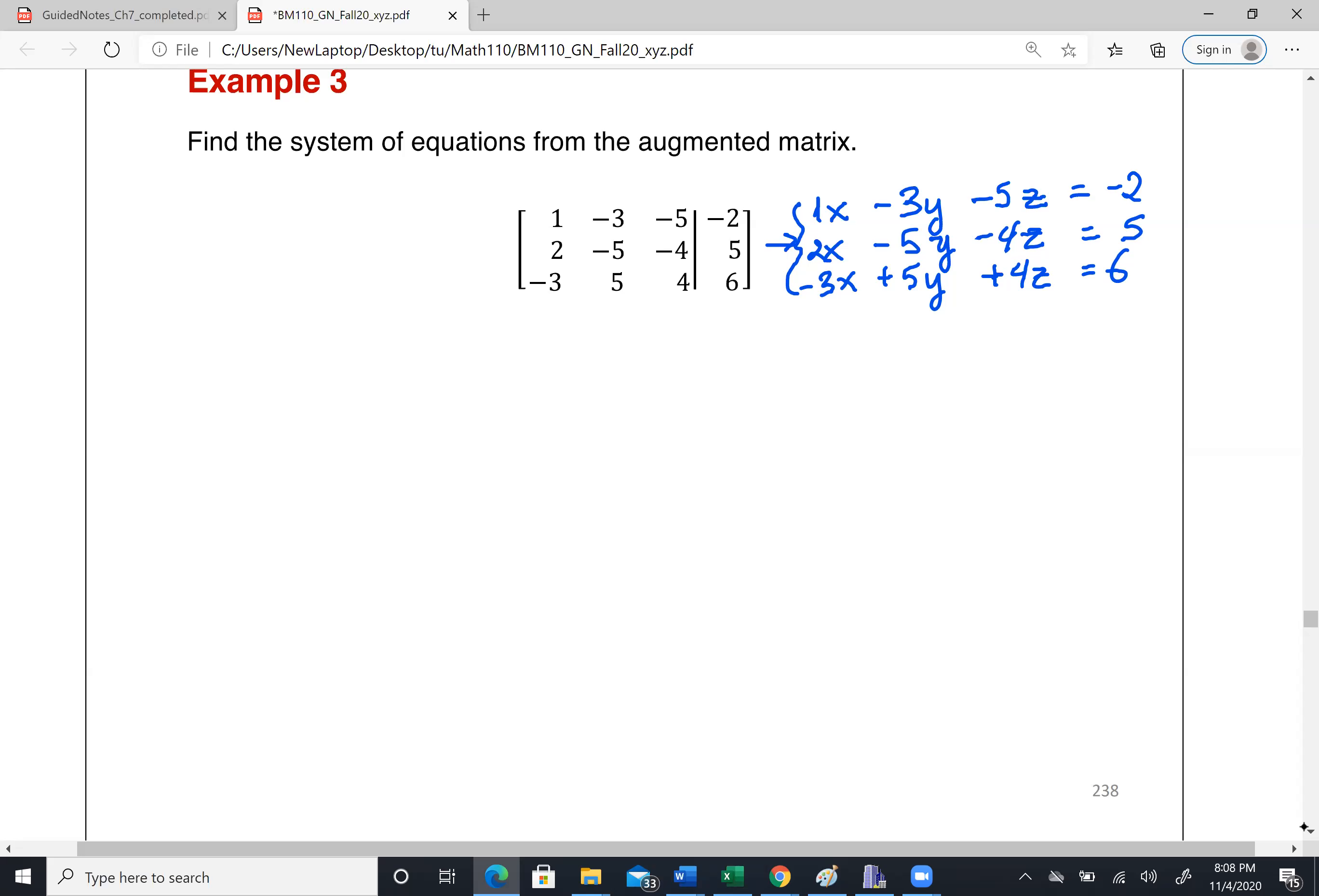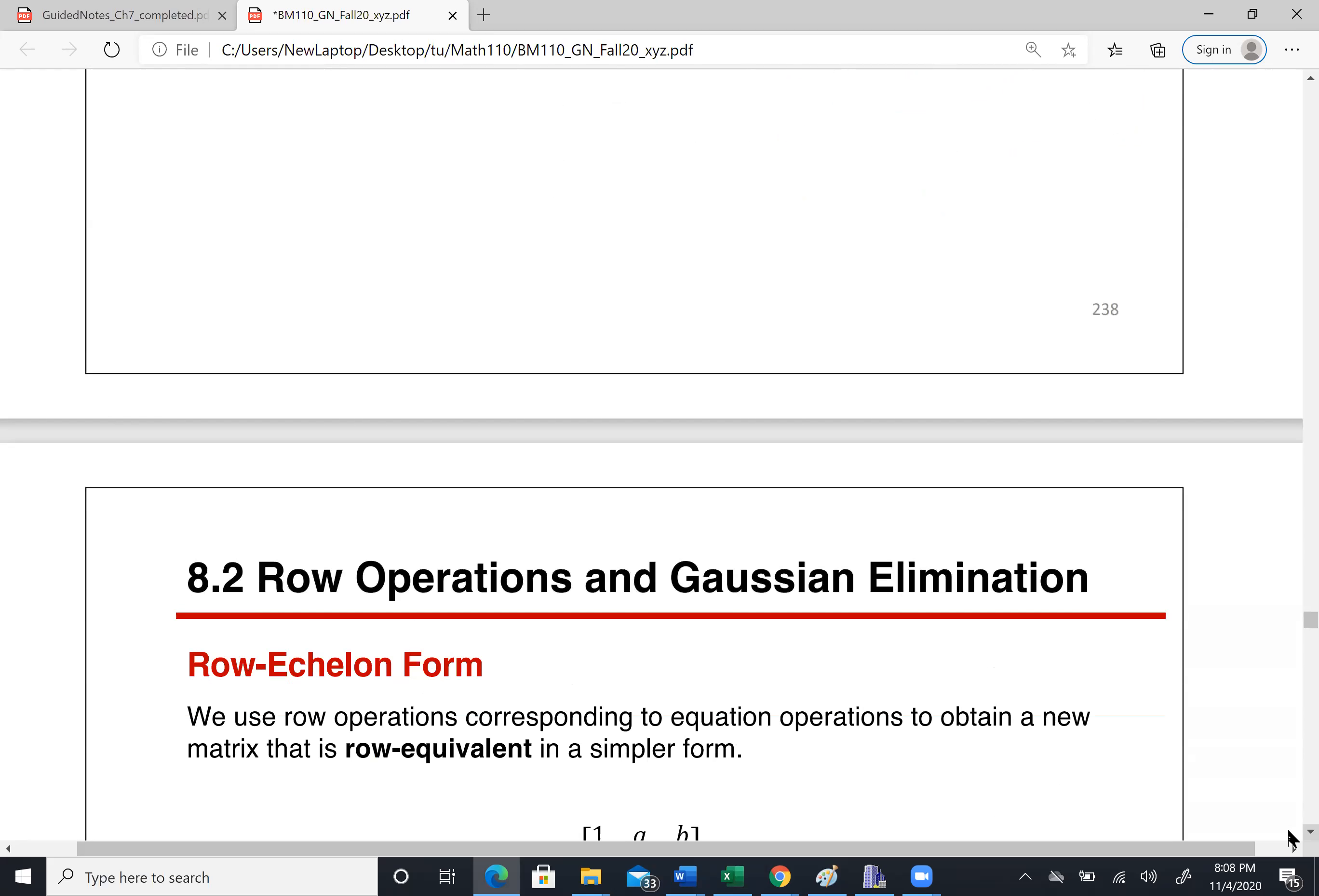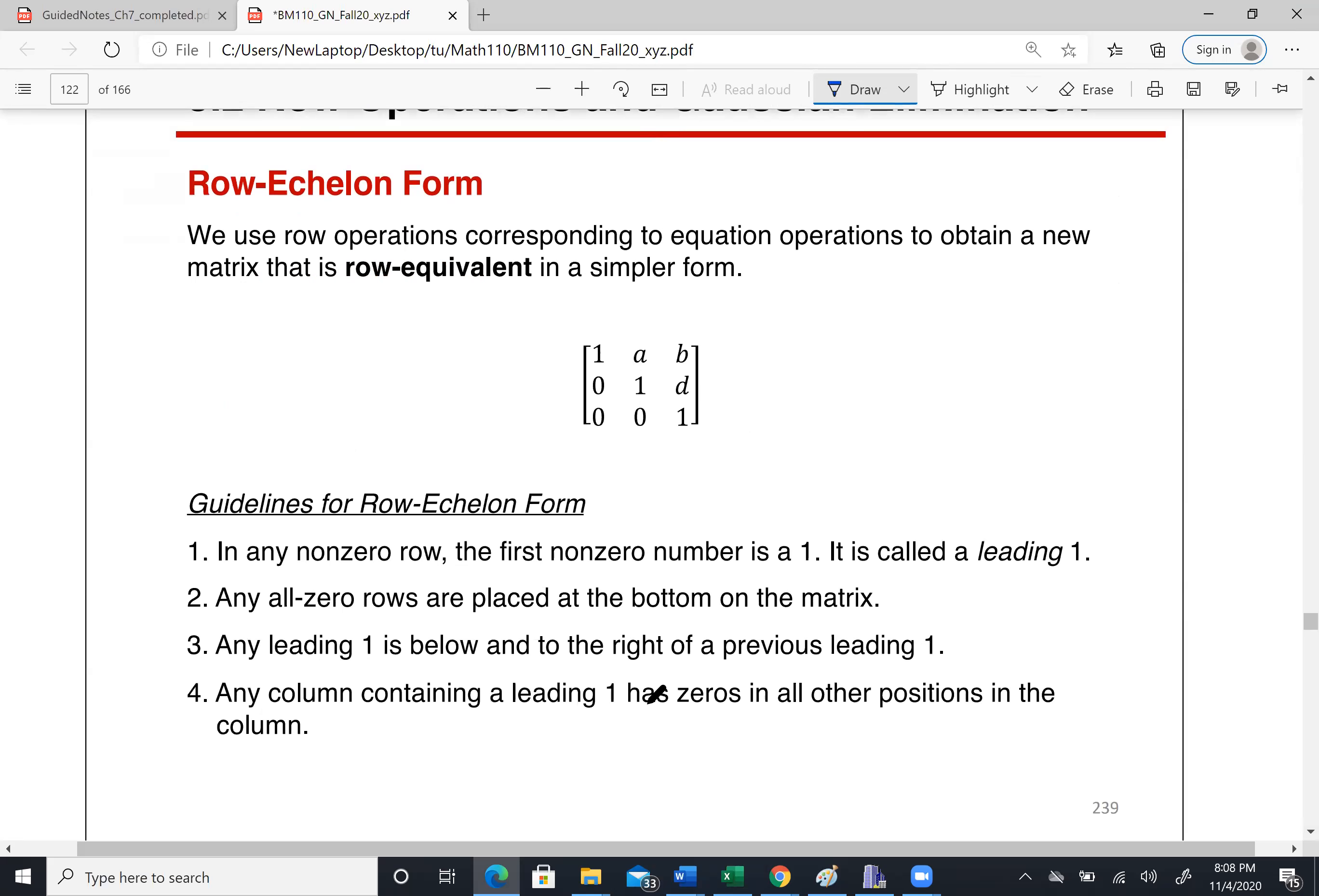So you actually can make number 1 be hidden because 1x is just x. And that should be the system of equation you need to know. So we done 8.1 and I'm going to talk about 8.2 later. So let's move down.